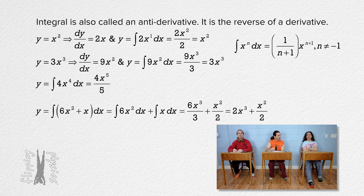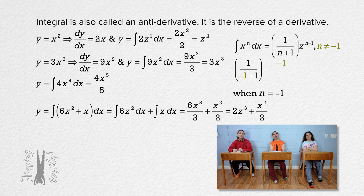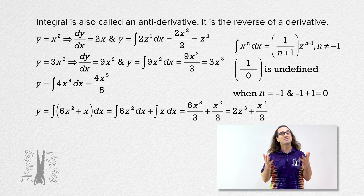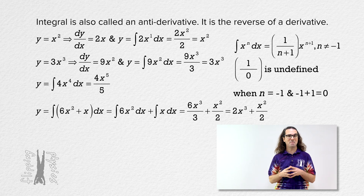What about the 'where n does not equal negative 1' part of the integral rule? What does that mean? When n equals negative 1, you would get negative 1 plus 1 or 0 in the denominator, and anything divided by 0 is undefined. So the rule does not work when n equals negative 1. That is how the math works.